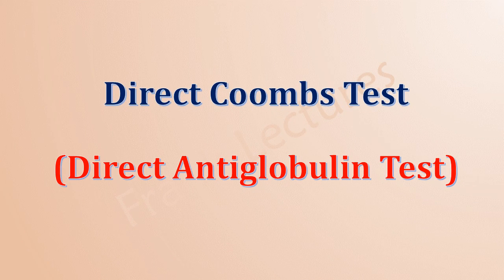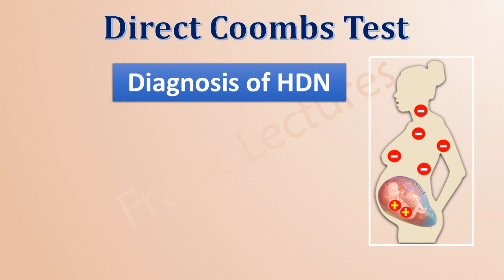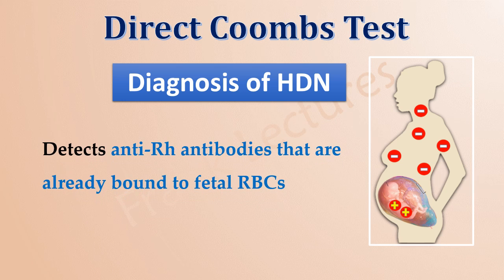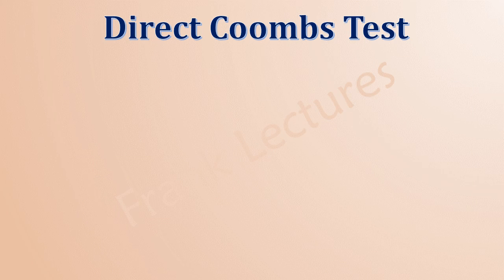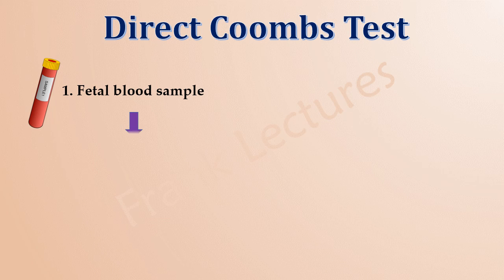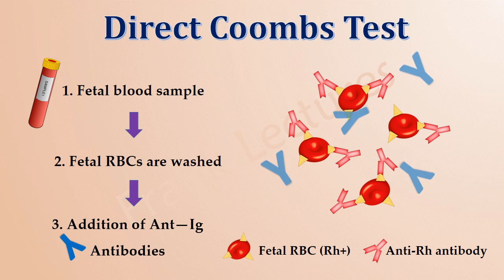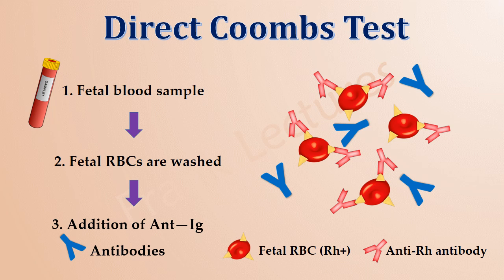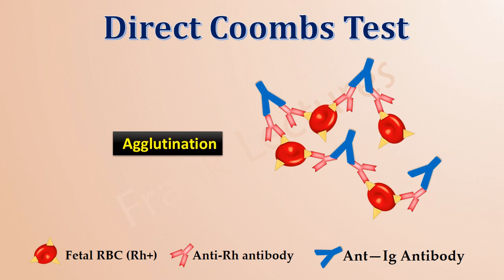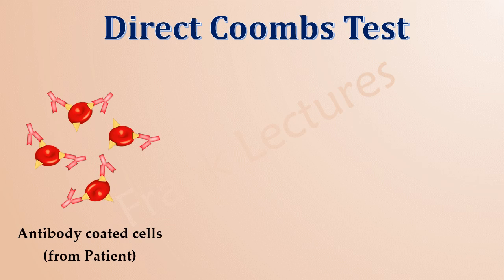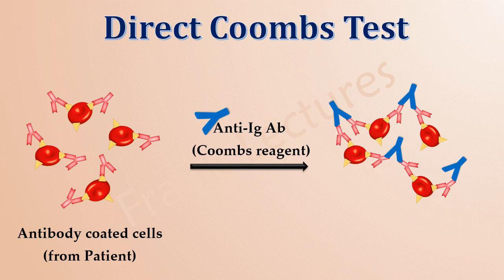The direct Coombs test, or direct anti-globulin test, is used for diagnosis of hemolytic disease of the newborn. It detects the anti-Rh antibodies that have already bound to fetal RBCs. A blood sample is obtained from the fetus and fetal RBCs are washed to remove any unbound and non-specifically bound antibodies. Anti-immunoglobulin antibodies targeted against the Fc region of anti-Rh antibodies are then added. These anti-Ig antibodies agglutinate any fetal RBCs to which anti-Rh antibodies are already bound, and the visible agglutination confirms their presence. This test is called the direct Coombs test because it directly detects the target antibody that coats red blood cells.